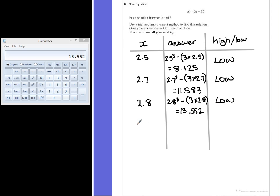So we'll try 2.9. 2.9³ - 3 × 2.9. 2.9 cubed, take away 3 times 2.9, close brackets. Now this value is too high.